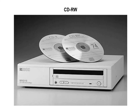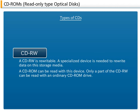A CD-RW can be used as rewritable storage. A specialized device is needed to rewrite data on this storage media. A CD-ROM can be read with this device, though only a part of the CD-RW can be read with an ordinary CD-ROM drive.